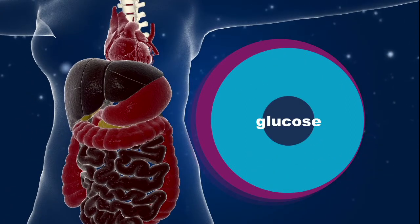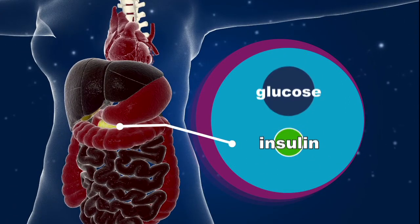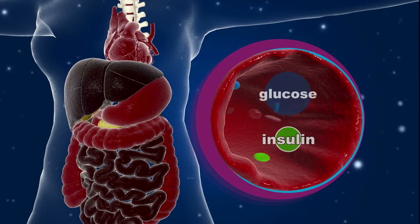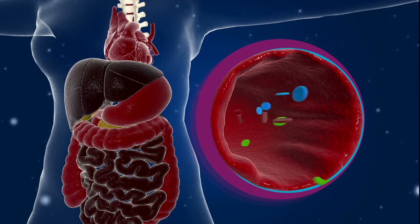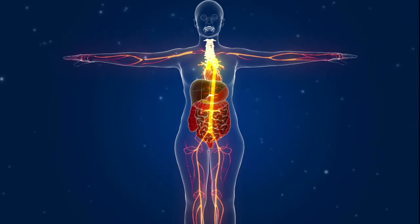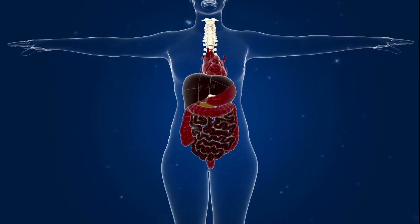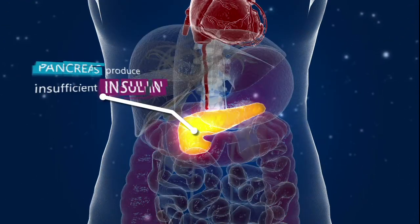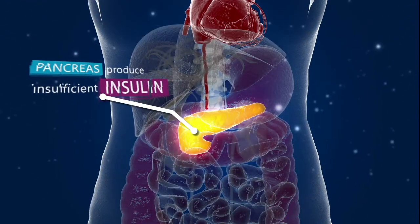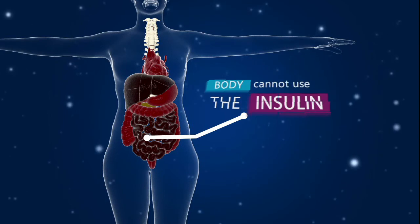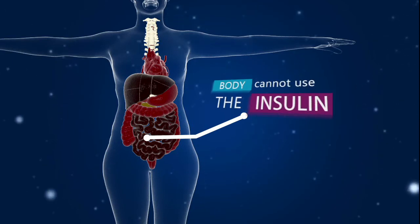This glucose then moves into the bloodstream, reaching each cell of the body with the help of the hormone insulin. In a diabetic condition, either the pancreas do not produce enough insulin, or the body cannot effectively use the insulin it produces.